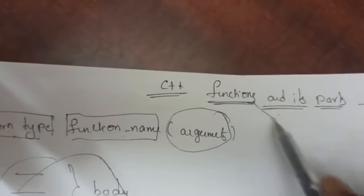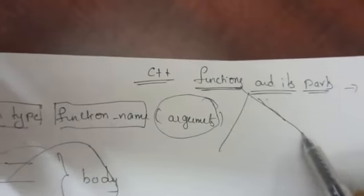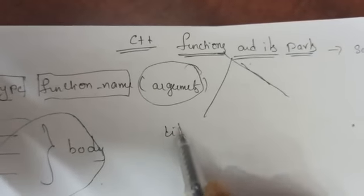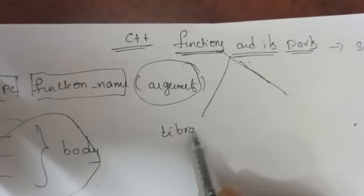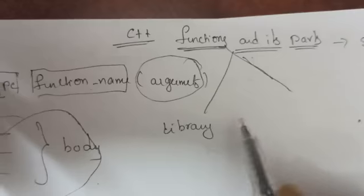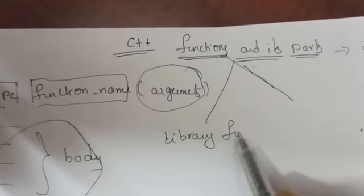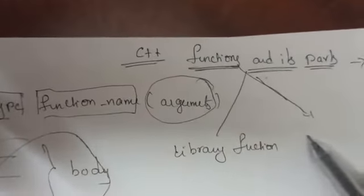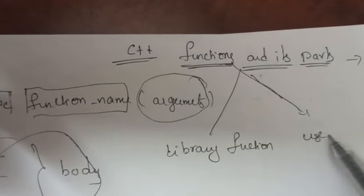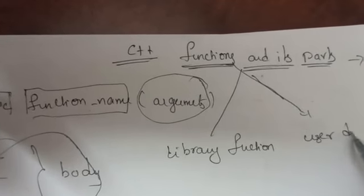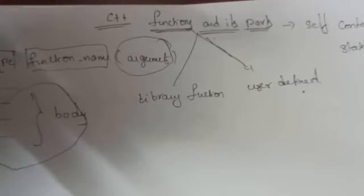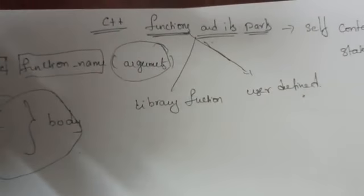In C++ there are two types of functions. One is library functions and another one is user-defined functions.